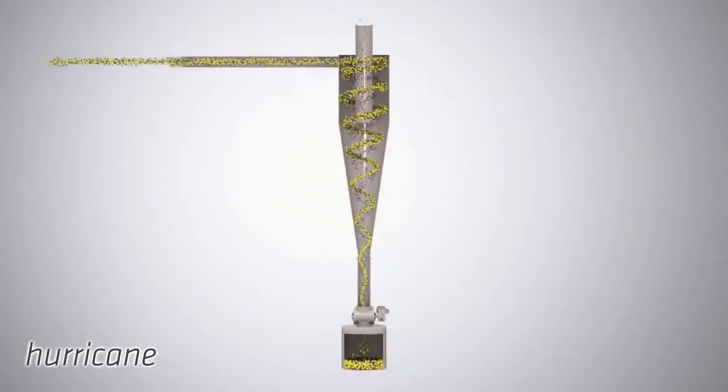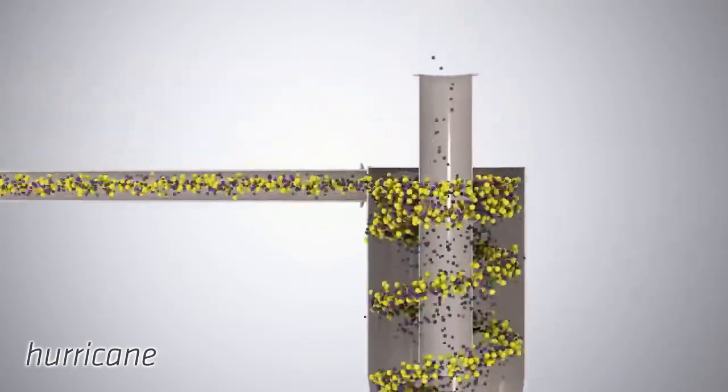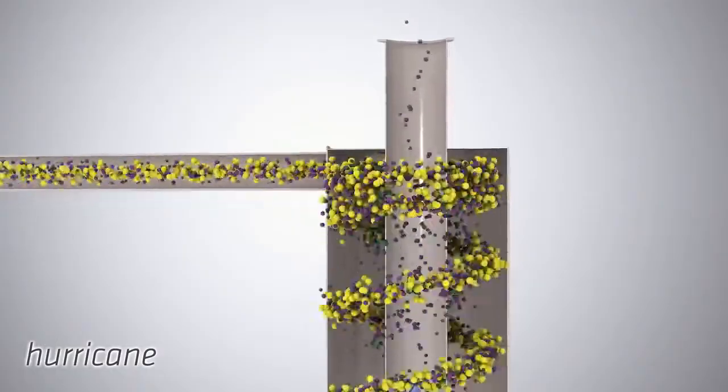The coloured dots indicate the particulates to be collected and the blue arrow represents the flow of gas that leaves the equipment.